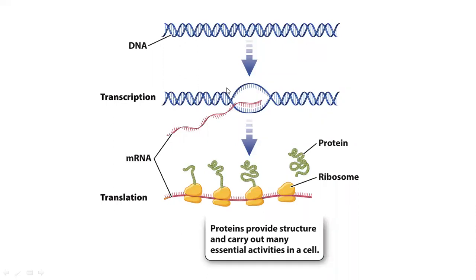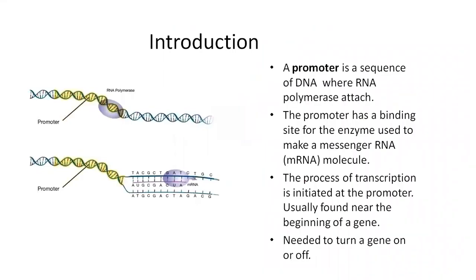Where RNA polymerase is attached — that is the sequence of our promoters. The promoter is basically the location where RNA polymerase is attached. For example, you can see the yellow structure of the DNA thread — that is your promoter. And the blue bubbles, this is your RNA polymerase. So RNA polymerase is attached with the promoter.